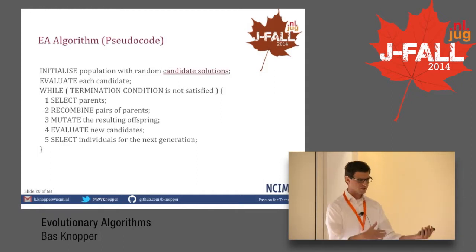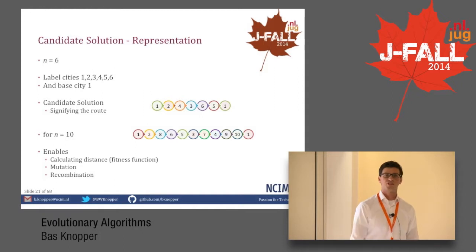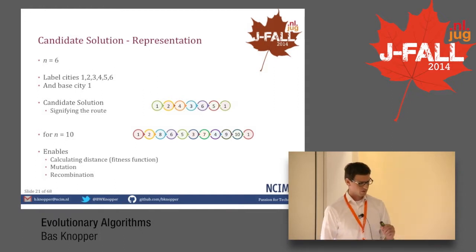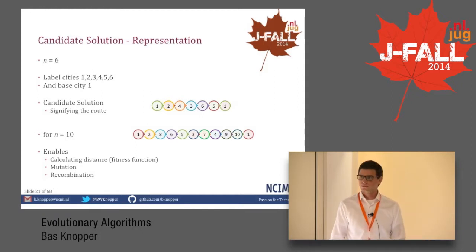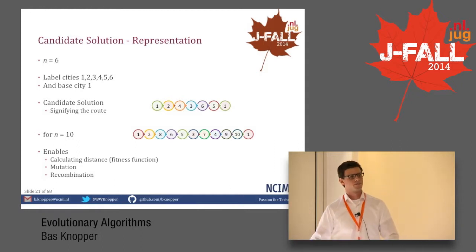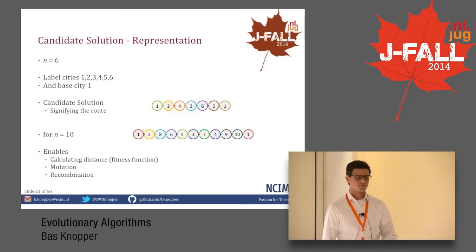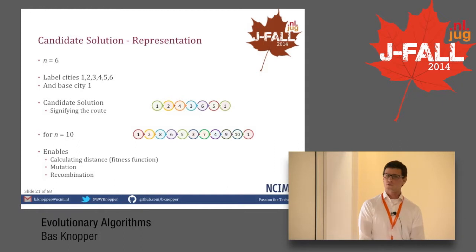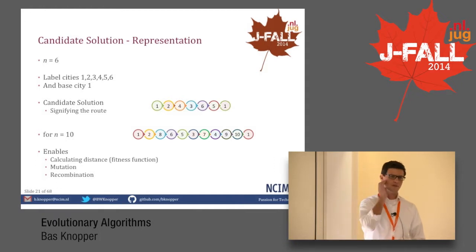We initialize the population with random candidate solutions — here's an important part: what is a candidate solution in our case? We're talking about representation. If n equals 6, so we need to visit 6 cities, we label these cities 1 through 6, and the base city will be 1. A candidate solution might look like this: it signifies the route, going from 1 to 2, 4, 3, 6, 5, and back home again. For n equals 10 it would look similar. This representation enables us to calculate the distance — our fitness function — and perform mutation and recombination.